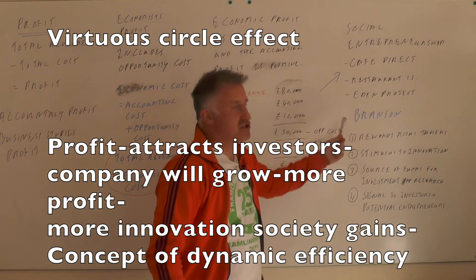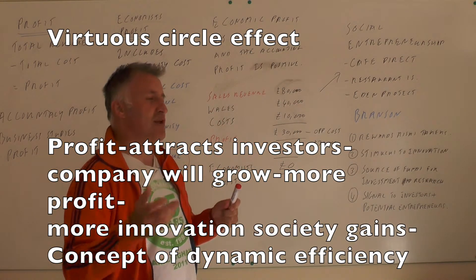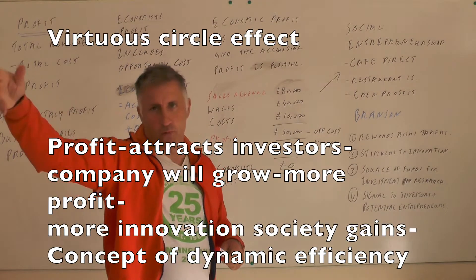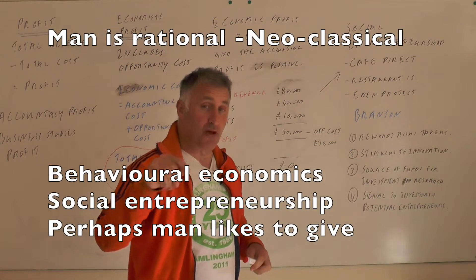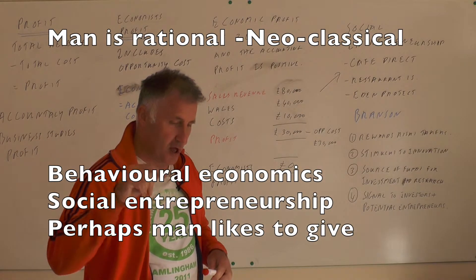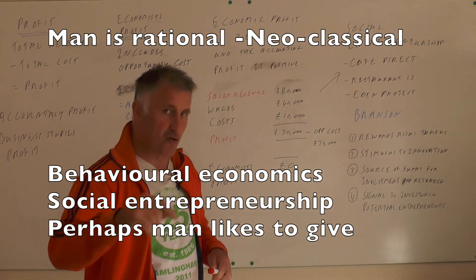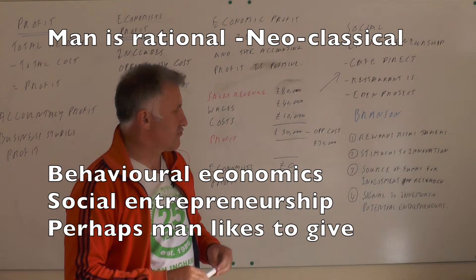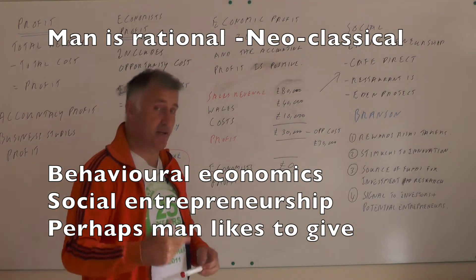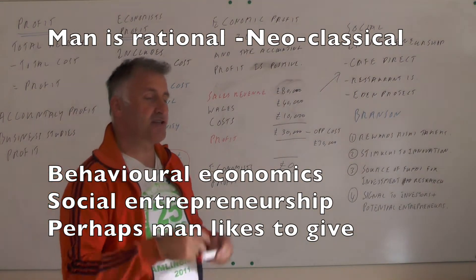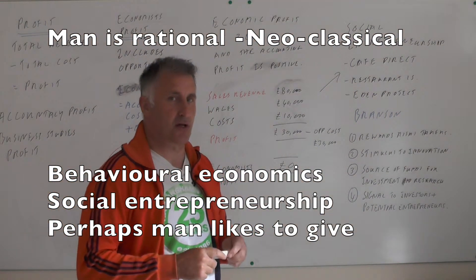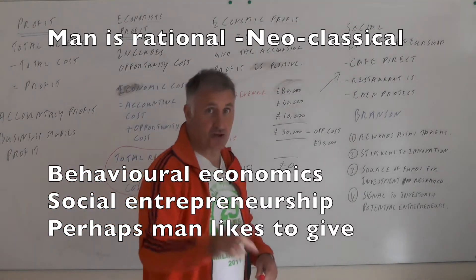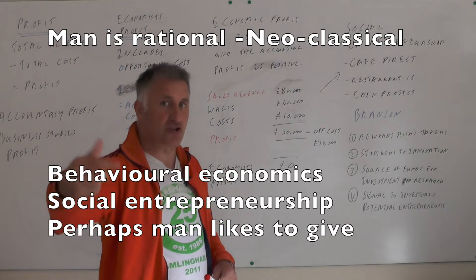We also look at the idea of social entrepreneurship. Remember behavioral economics from lessons five and six — choice architecture, default options? One of the criteria for the neoclassical view of man is that he is highly rational and very selfish. Social entrepreneurship, however, is about giving something back — you set up a business but its aims are for the community or the environment. I'm actually setting this up to become a social entrepreneur myself.